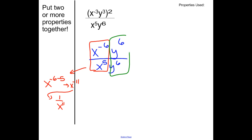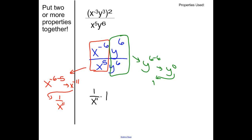Now look at the y values: y to the 6th divided by y to the 6th — that's 1. Or using the quotient rule: y to the 6 minus 6 equals y to the 0, which equals 1. So we have 1 over x to the 11th times 1, and our actual answer is 1 over x to the 11th. Take it piece by piece, slow down — it's not too difficult, just make sure you remember all the rules.